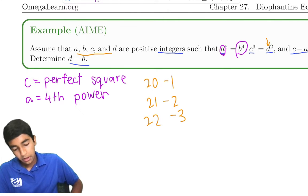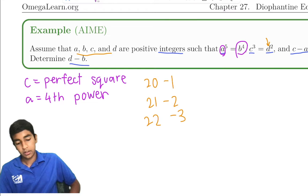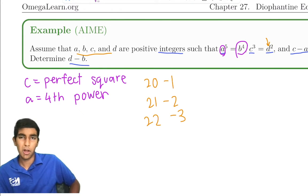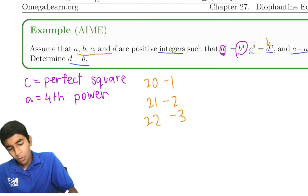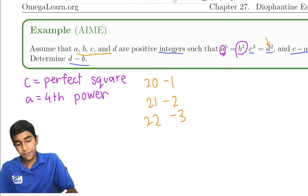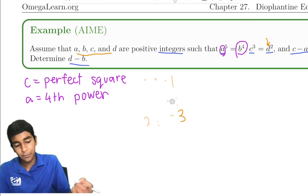So c is a perfect square, a is a fourth power. Now we still have a bunch of possibilities, or do we have a bunch of possibilities? There's much less fourth powers than perfect squares. So let's even see what these fourth powers could be.